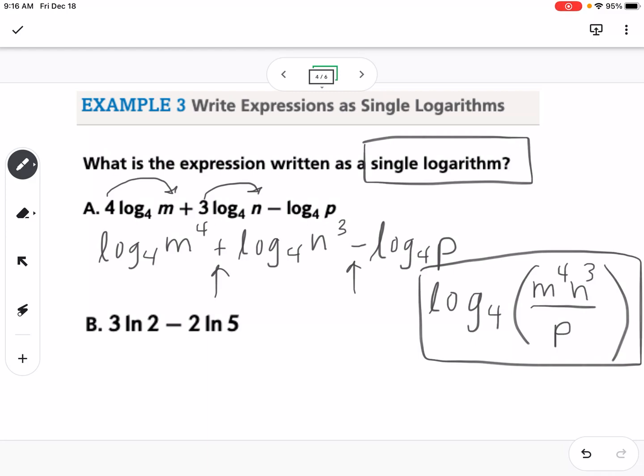Same process on the second one, so I'm going to write this as natural log of 2 cubed minus natural log of 5 squared, and then as a single log, my dog decided now is a good time to take a drink, so natural log of 2 cubed over 5 squared. So that's how we write that as a single log.